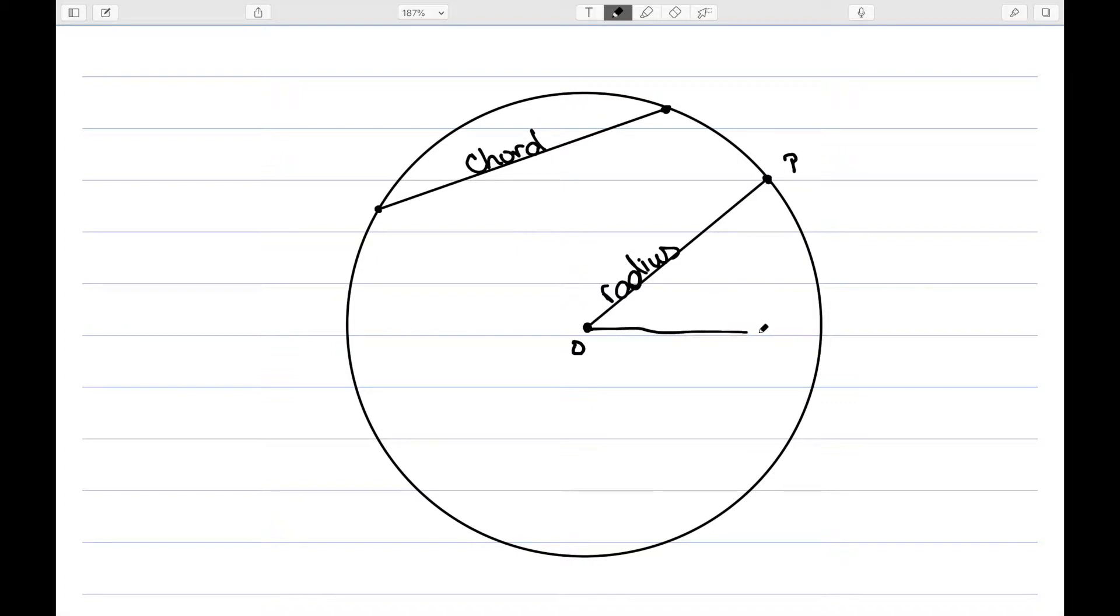And if I look at an actual angle whose sides are two radii, this is known as a central angle. So these are the three things I'm going to be the most concerned with.